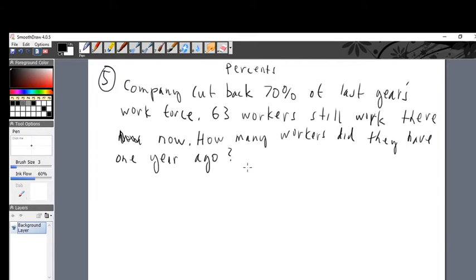Okay, now a mistake was made on the last video, it's being corrected now. There's 63 workers still work there. They cut back 70%. There used to be 100% last year. Now when they took away 70% of those workers, how many are left? Now 30% of what used to be there. That's the crucial calculation.